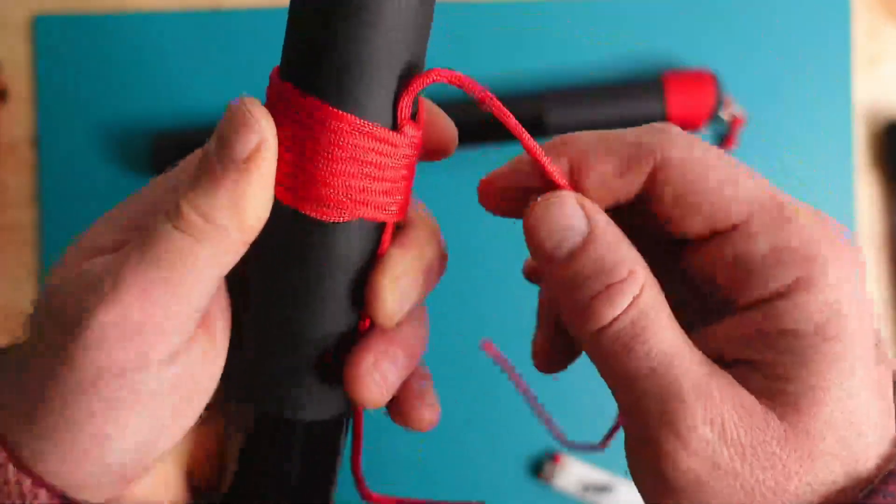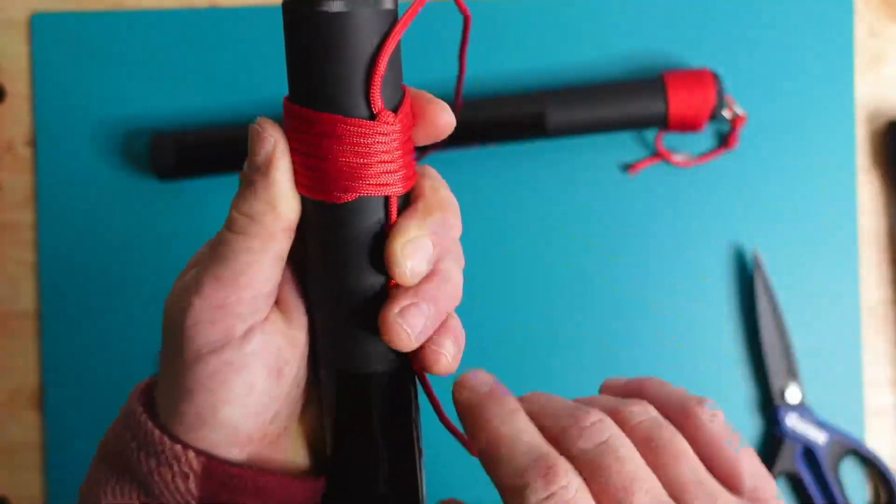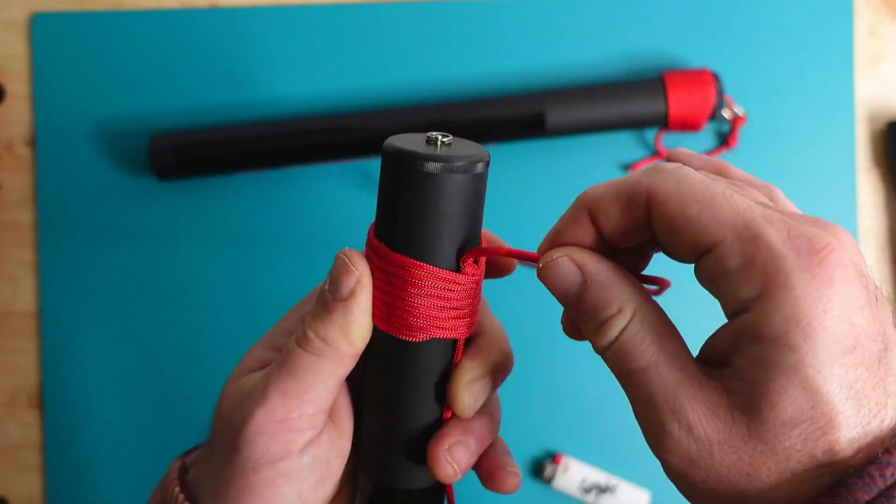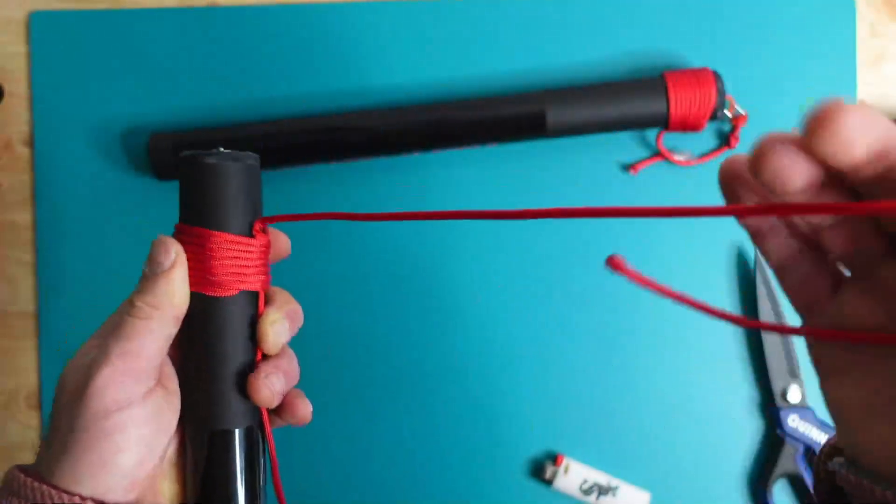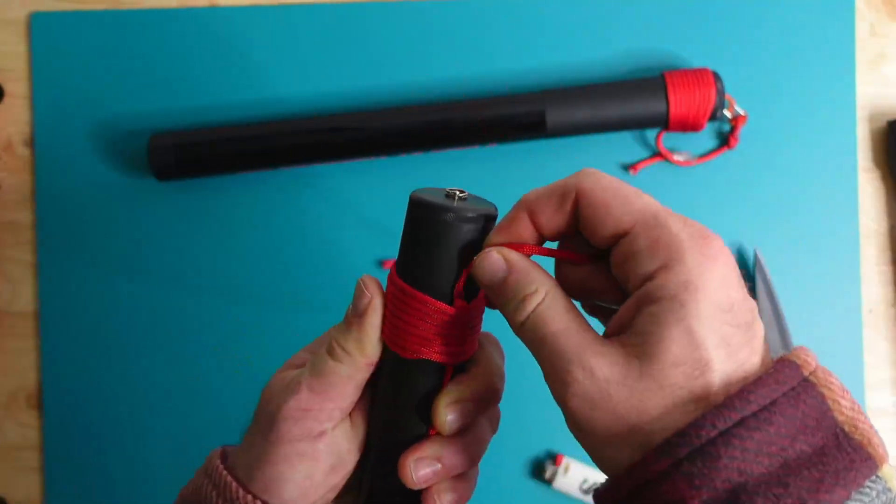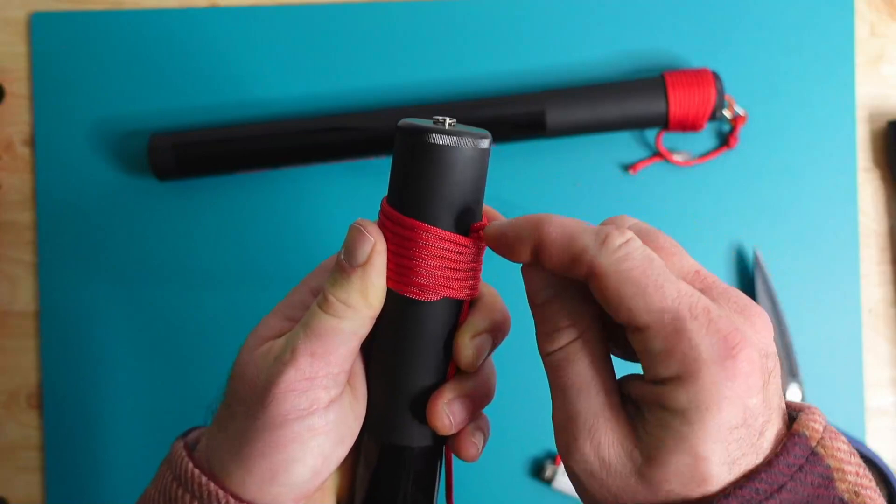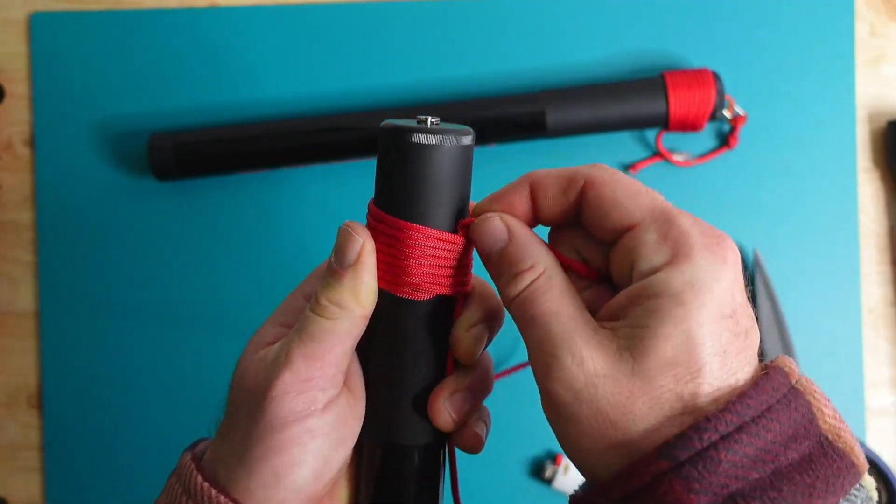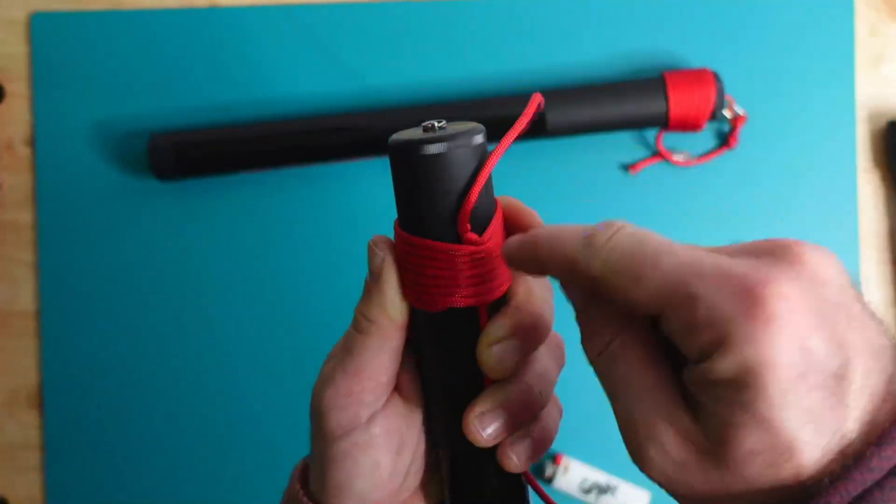What we're going to want to do is we're going to want to pull on the end that we started with being open, on the top. And as we pull it, this gets really tight. Now this is where I'll tell you, I'll be wrong to tell you this, but I'm going to cut the bottom open end close to the actual knot that was formed.